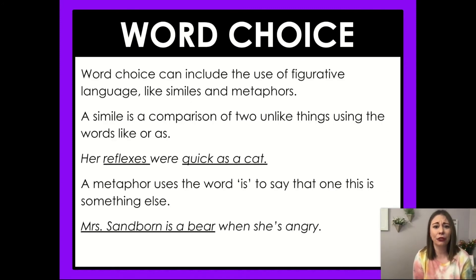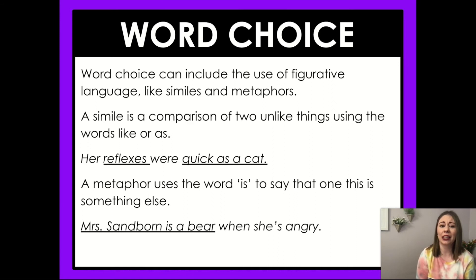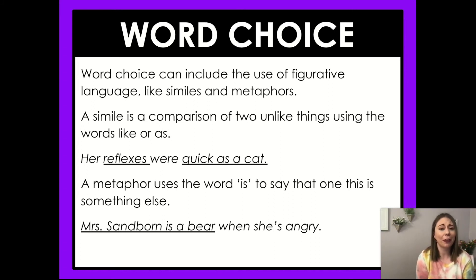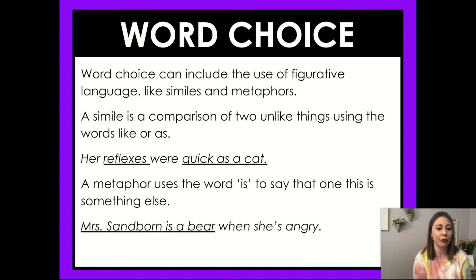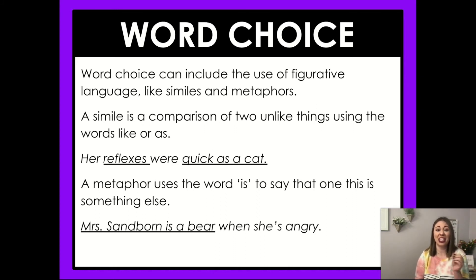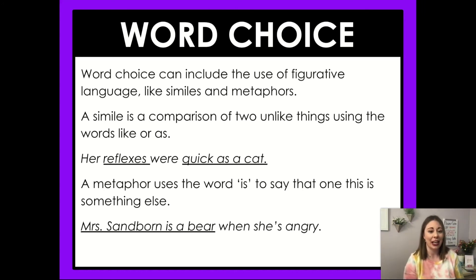Word choice can include the use of figurative language, like similes and metaphors. A simile is a comparison of two unlike things using the words 'like' or 'as.' For example, 'Her reflexes were as quick as a cat' — they're comparing reflexes to a cat's speed. A metaphor uses the word 'is' to say that one thing is something else. So like 'Mrs. Sandborn is a bear when she's angry.' We know Mrs. Sandborn is not actually a bear, but we could say she's a bear when she is angry.